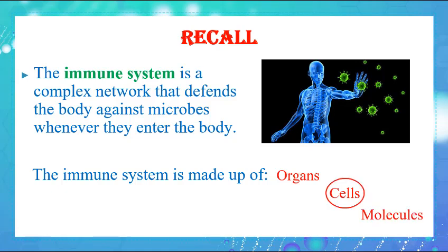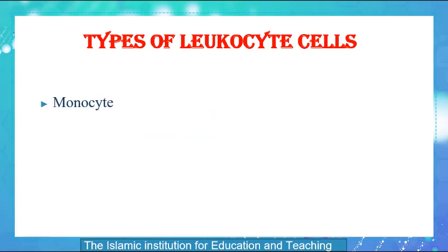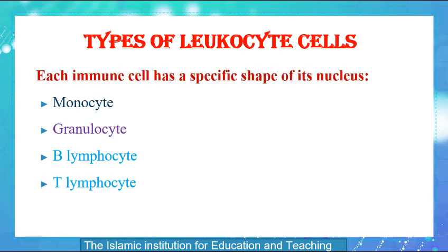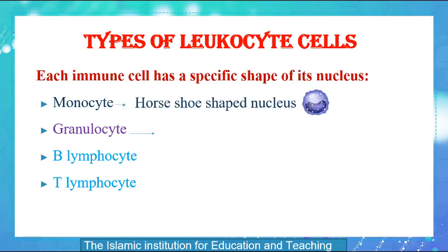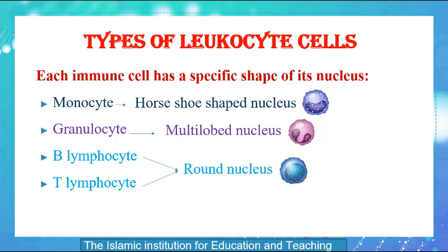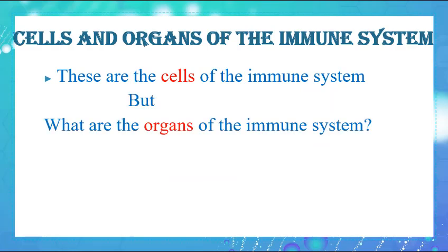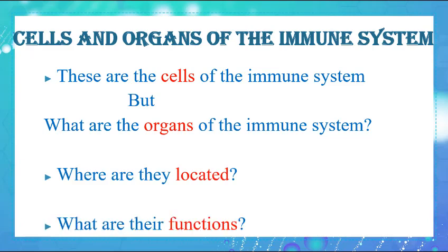We talked before about the cells. What are the types of leukocyte cells? Monocyte, granulocyte, B-lymphocyte, and T-lymphocyte. Each immune cell has a specific shape of its nucleus. Monocyte has a horseshoe-shaped nucleus, granulocyte has a multi-lobed nucleus, and B- and T-lymphocyte have a round nucleus.